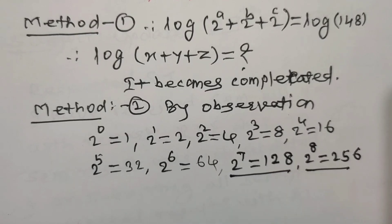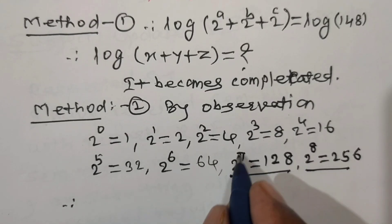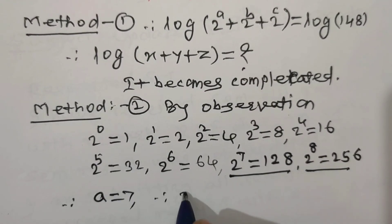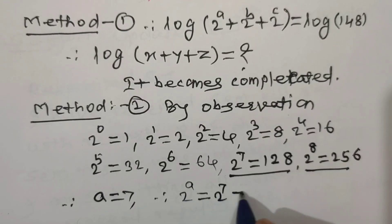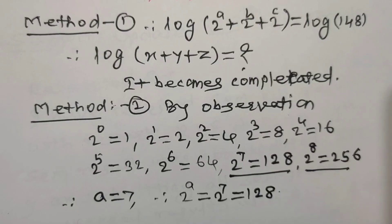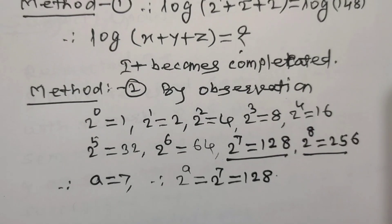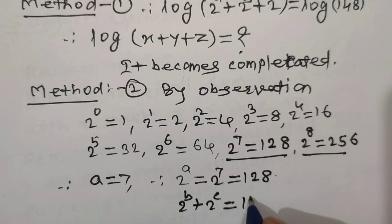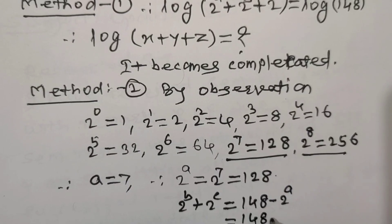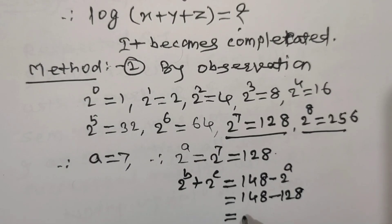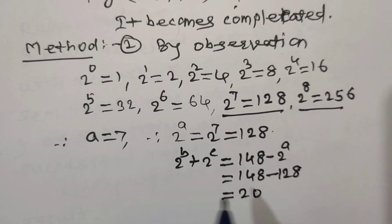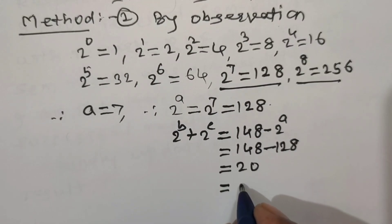So we have to consider 128. Hence, if we substitute a = 7, then 2^a = 2^7 = 128. Now we have to find values of b and c such that 2^b + 2^c = 148 − 128 = 20. This 20 is also the sum of two numbers that are powers of 2: only two numbers work — 4 plus 16.